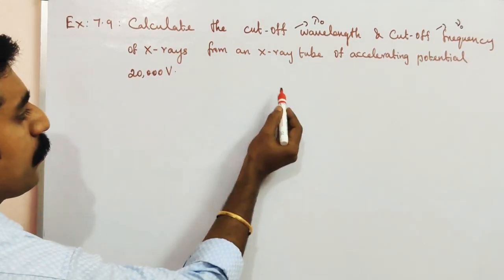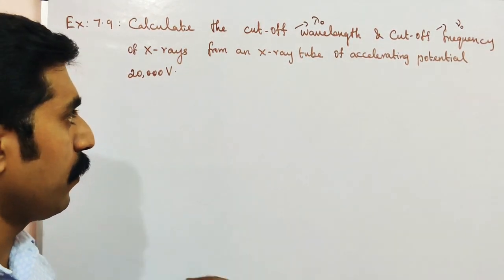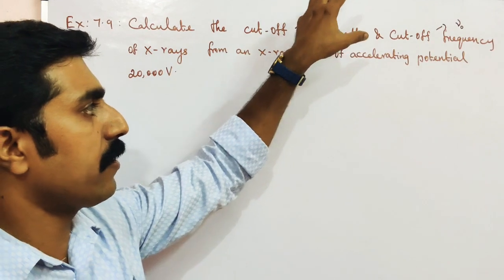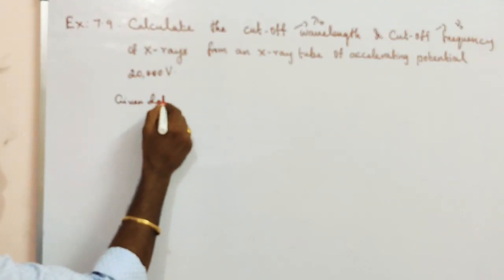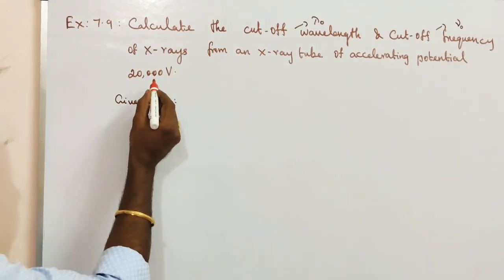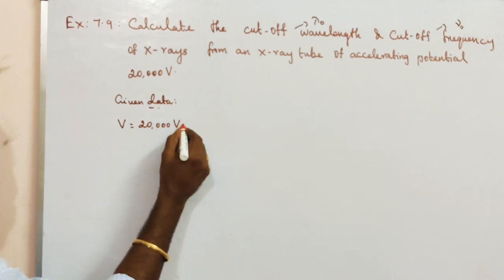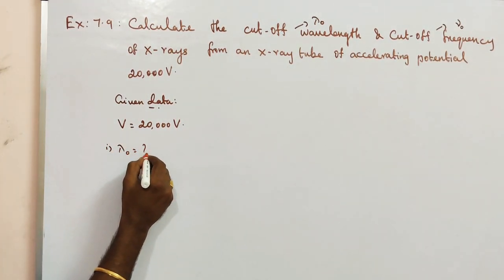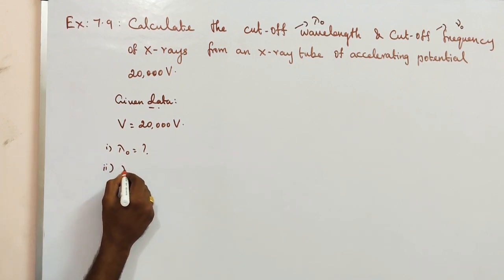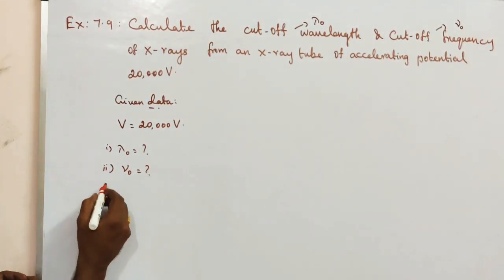Where are the X-rays coming from? From an X-ray tube with an accelerating potential of 20,000 volts. The X-rays are produced. We need to find: first, the cutoff wavelength λ₀, and second, the cutoff frequency ν₀. This is a textbook example.